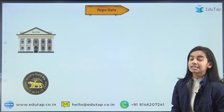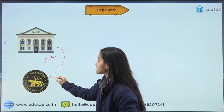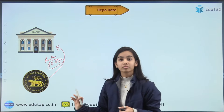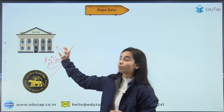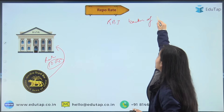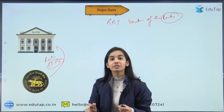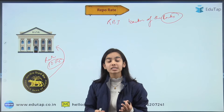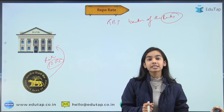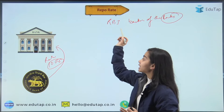Starting with the meaning of the repo rate: in simple terms, the repo rate is the rate at which the bank is taking loans from the RBI. RBI is the banker of the banks — just as banks take deposits and give loans to customers, the RBI takes deposits from banks and gives loans to banks.